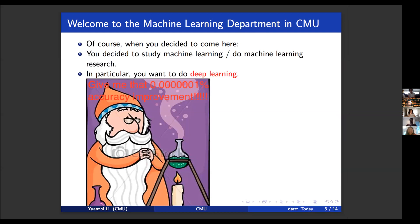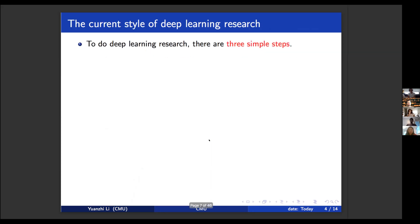So basically you are going to do this fantastic stuff that you are spending all your effort trying to improve the performance by 0.00001%. To do deep learning research, there are three very simple steps that you want to take.